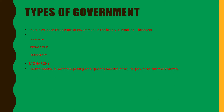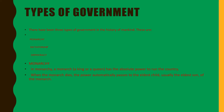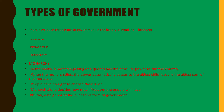Monarchy. In monarchy, a monarch has the absolute power to run the country. When the monarch dies, the power automatically passes to the eldest child, usually the eldest son of the monarch. People have no right to choose their ruler. The monarch alone decides how much freedom the people will have. Bhutan, a neighbour of India, has this form of government.